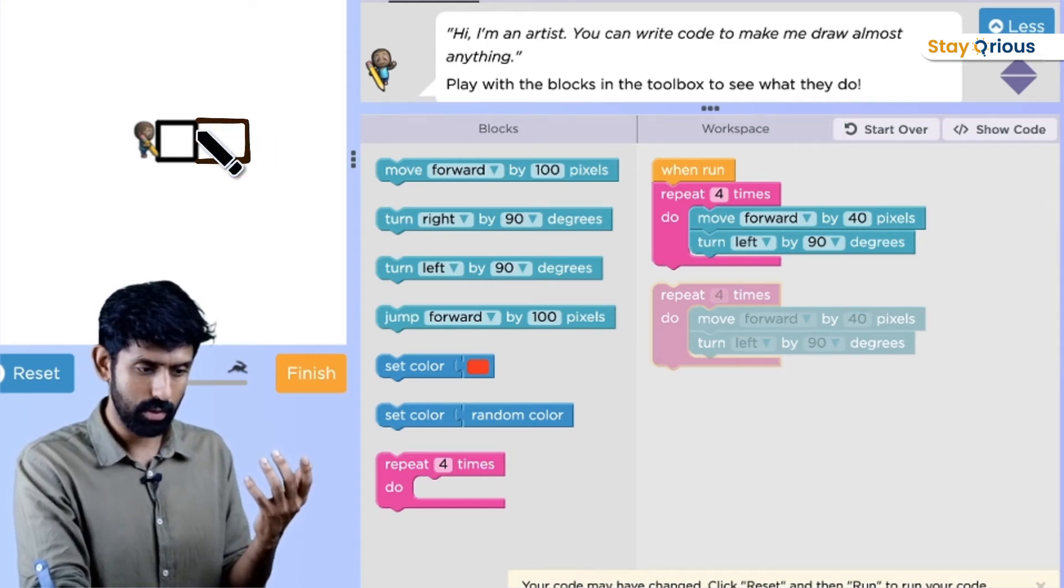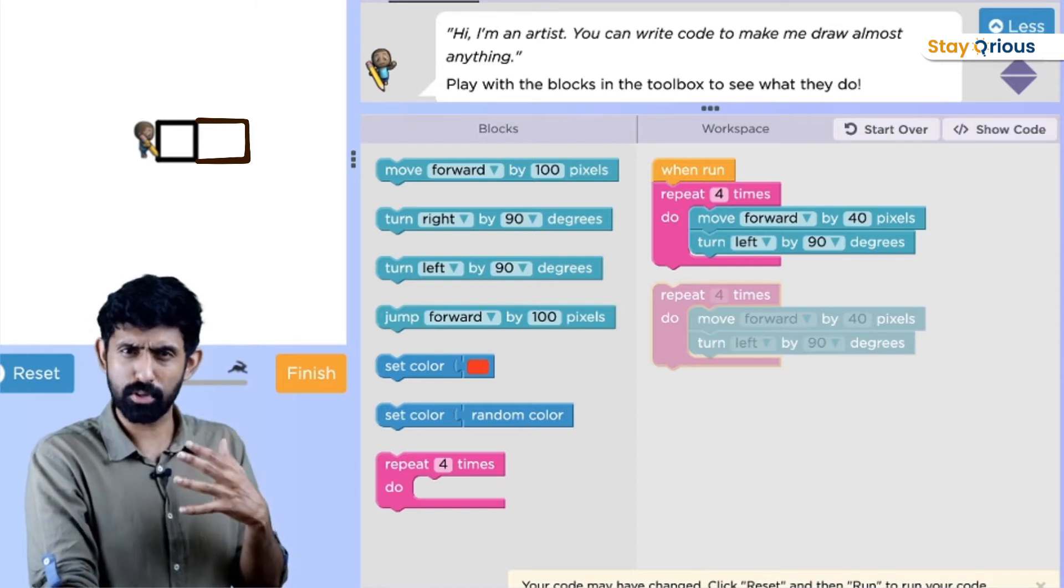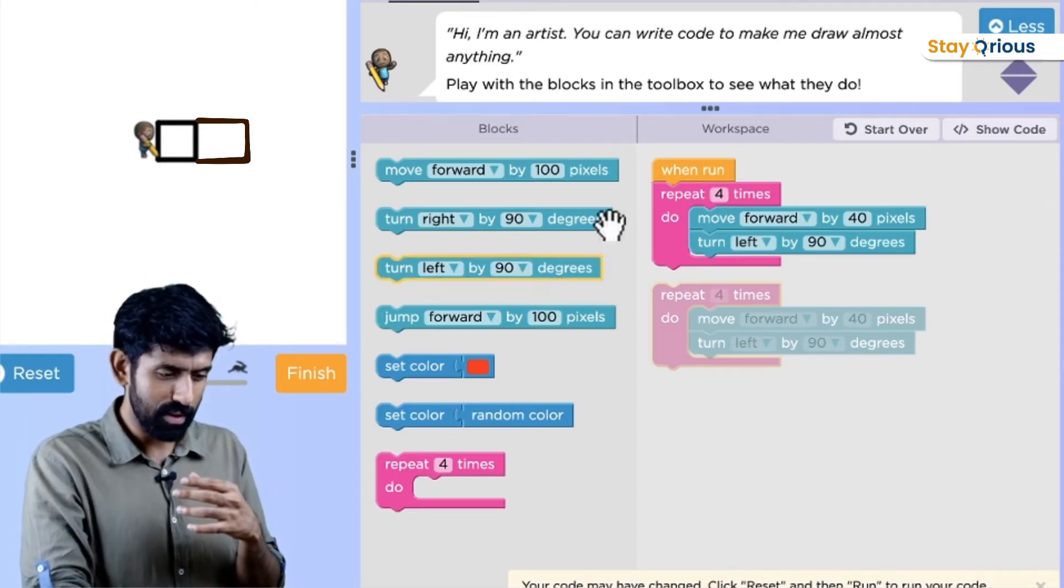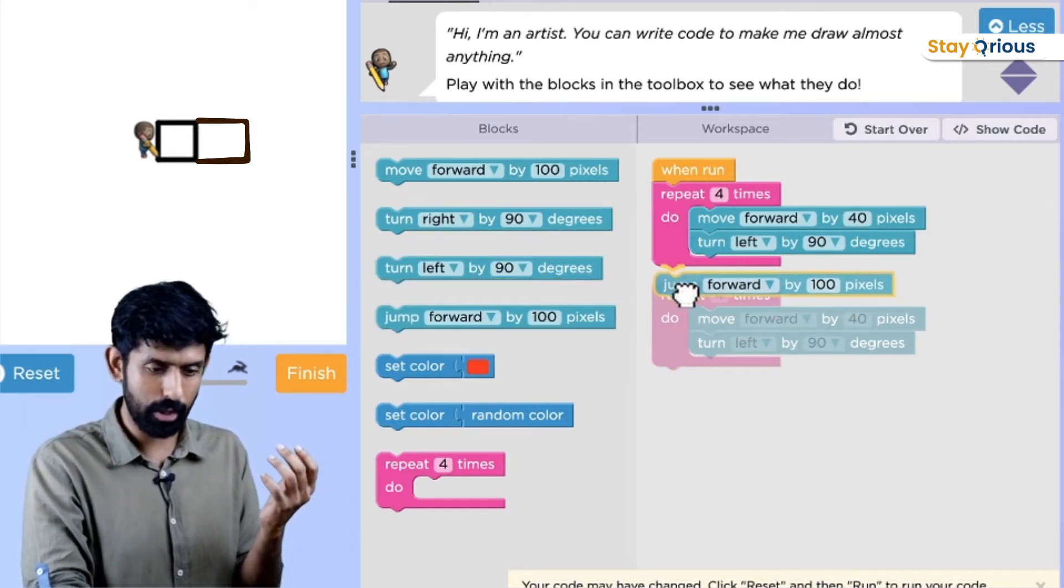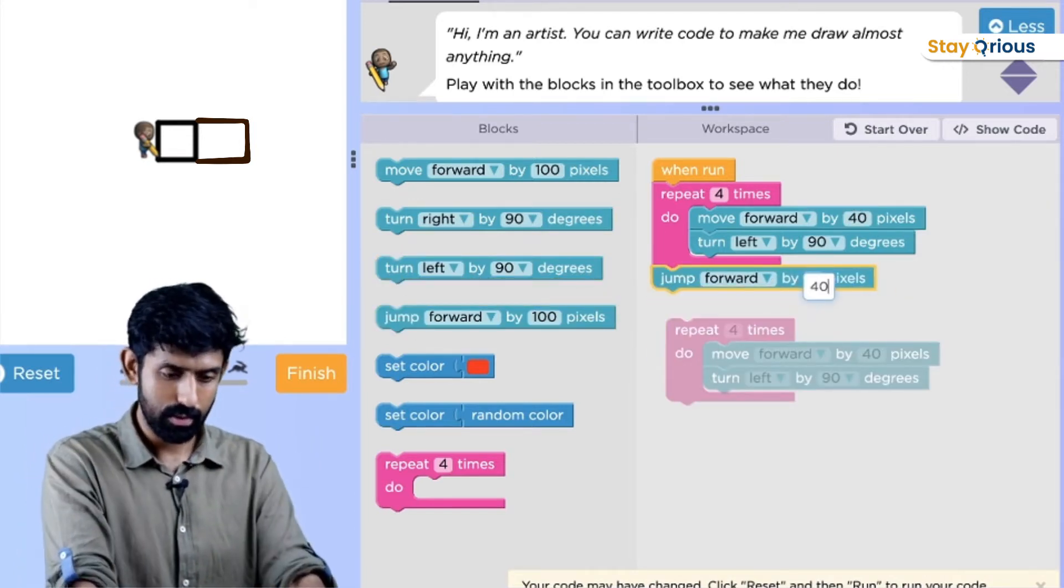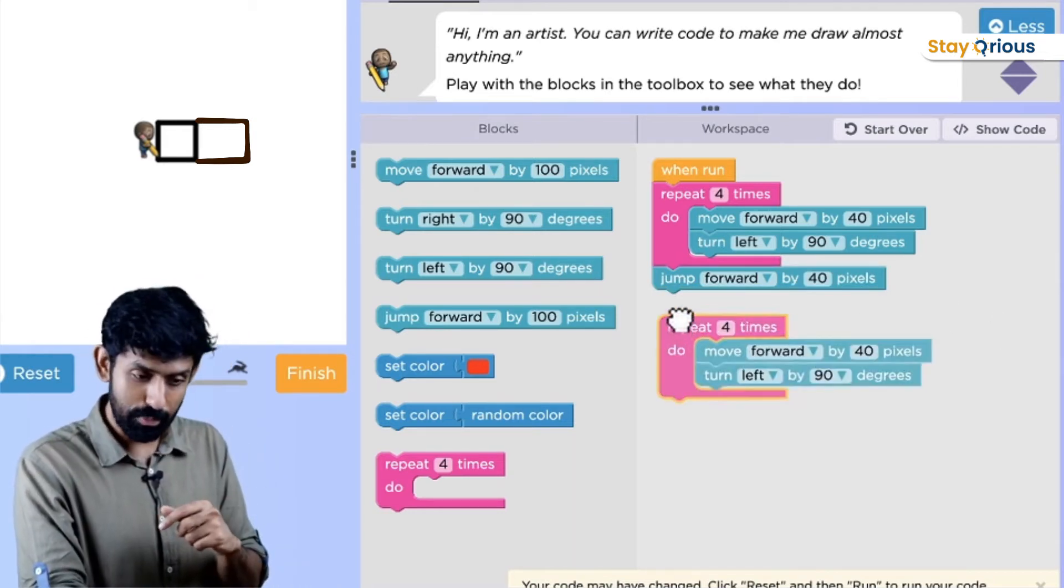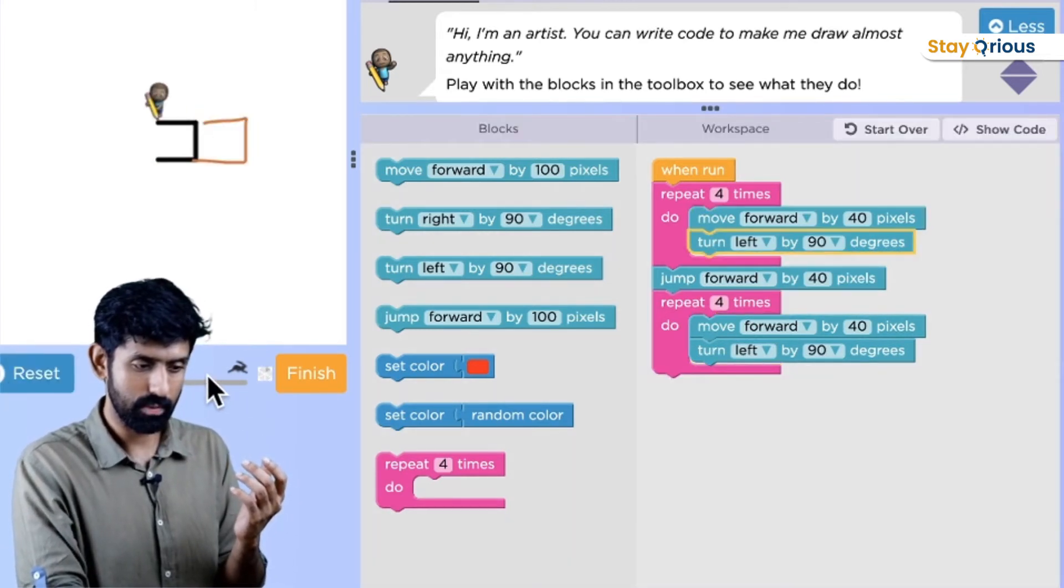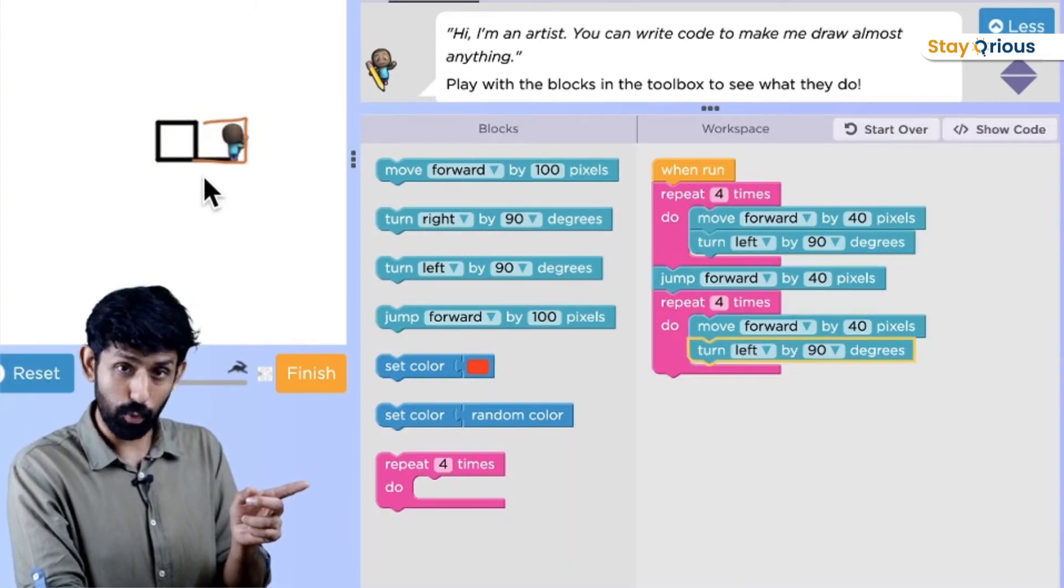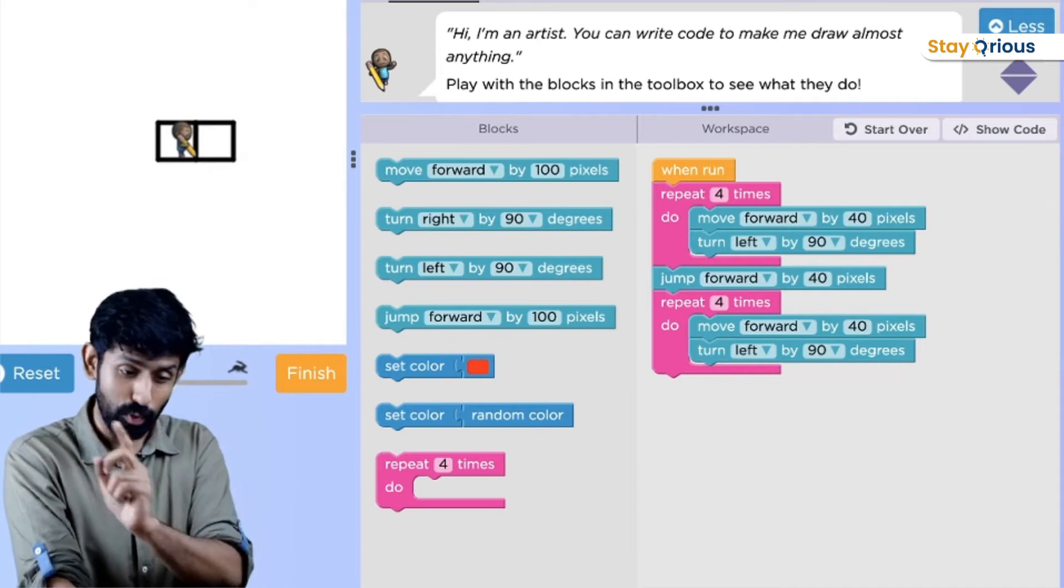Then how much should you jump forward? Think about it, the same amount you move forward, right? That's what you should do. So I'm going to jump forward by 40 pixels. Now, let me put this square again. Let's see if this works. Okay, one square. Then he jumps forward. There it is. So I did get what I wanted to get done.